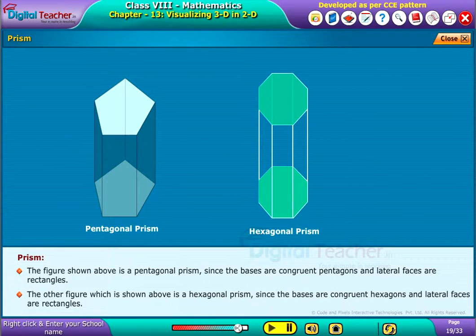The other figure which is shown above is a hexagonal prism, since the bases are congruent hexagons and lateral faces are rectangles.